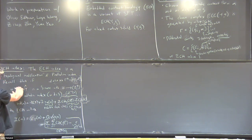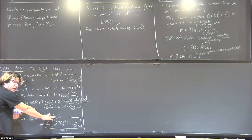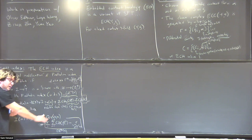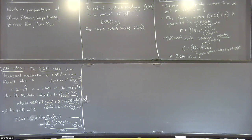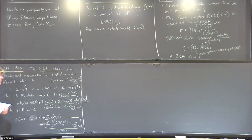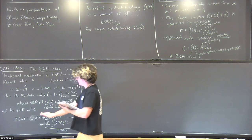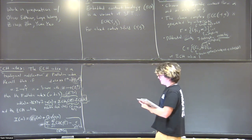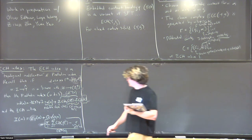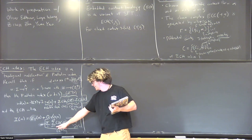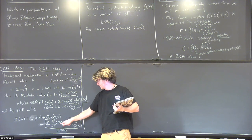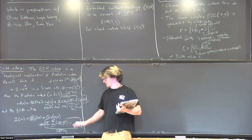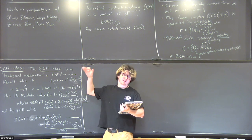In particular, the ECH index is just a function of the current represented by U, not actually of U itself. The CZ term looks like: you take the sum over all orbits in the orbit set of the sum from one to the multiplicity of the Conley-Zehnder index of that simple orbit iterated up to the multiplicity. So it's like the sum of the Conley-Zehnder indices of all the covers up to the multiplicity appearing in the orbit set.